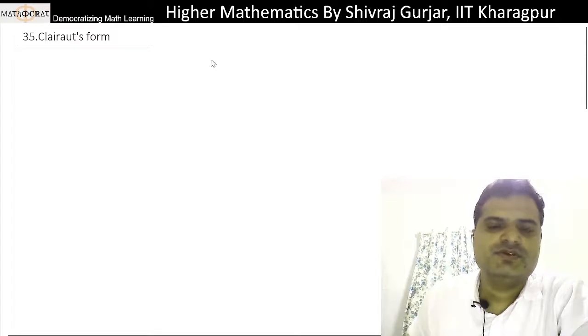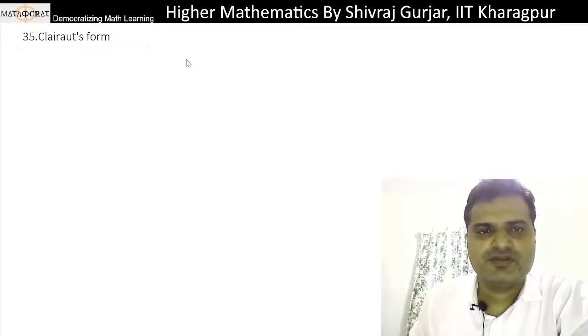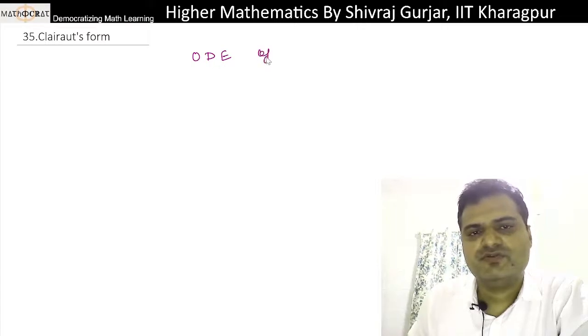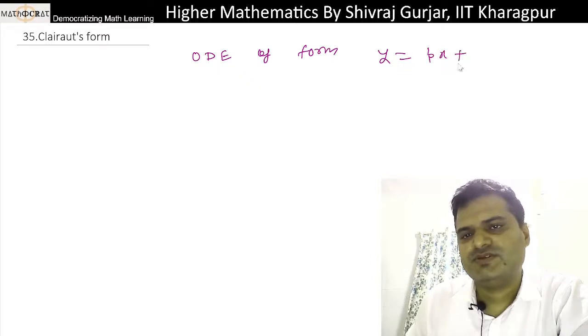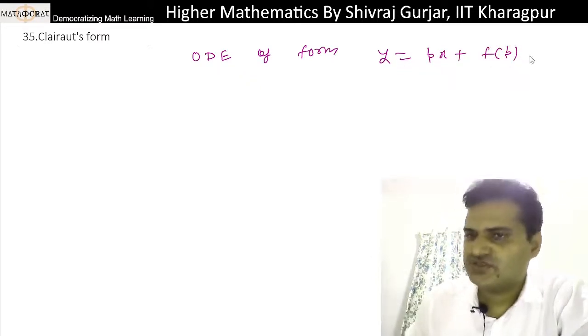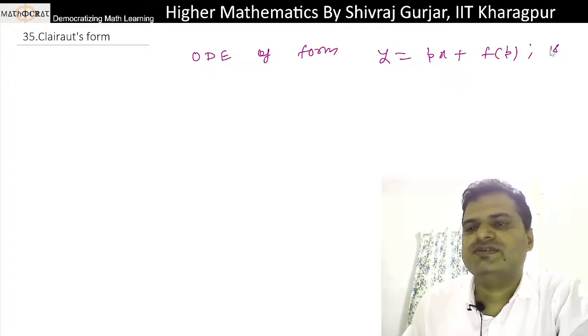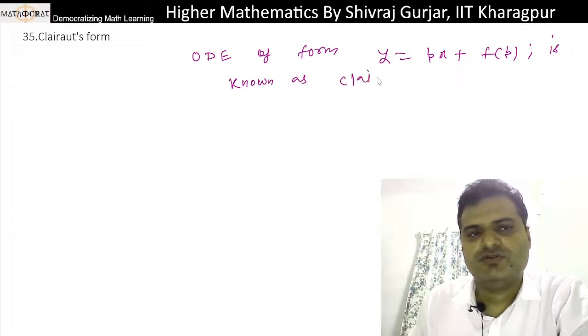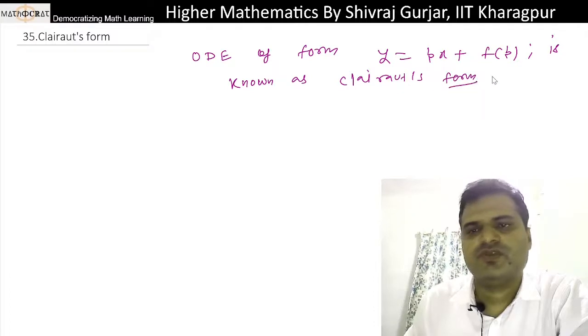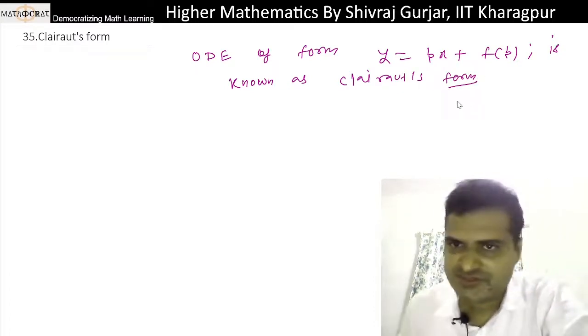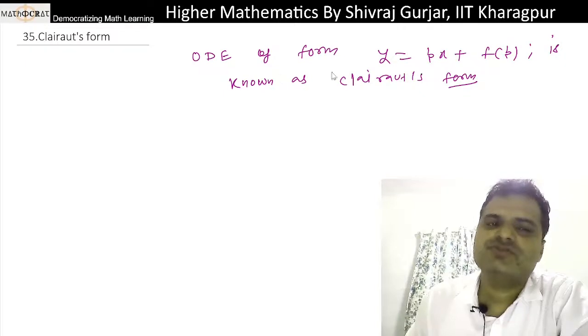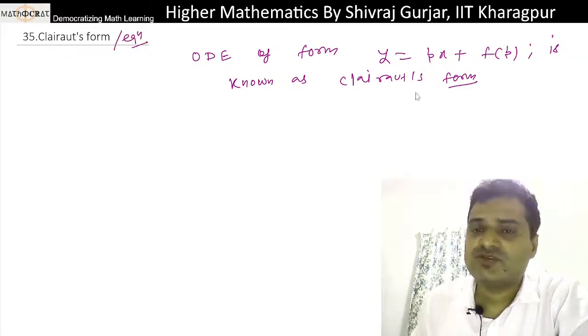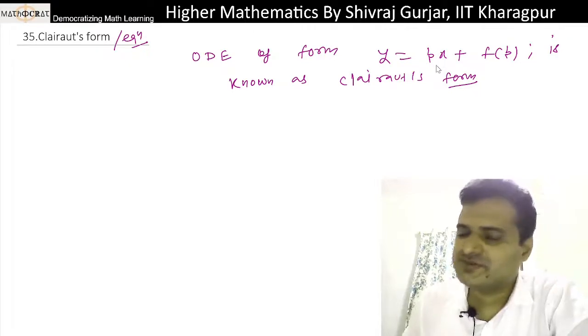Any ordinary differential equation of the form y = px + f(p), where f is a function of p, is known as Clairaut's equation. This is a special case of Lagrange's equation.